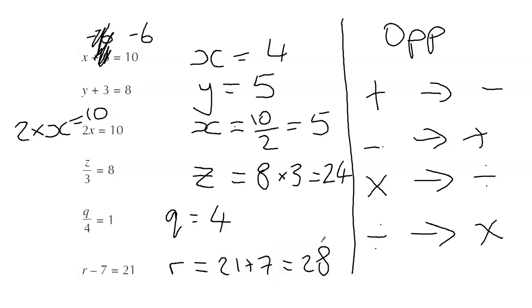So in each of these one-step calculations, we have to ask ourselves, what maths is happening to the letter? And then we do the opposite of that maths to the number on the other side. Everything else stays, it's just that number that we're moving, we're getting rid of. When it comes over the other side, it does the opposite maths.